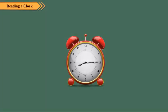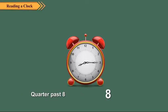Look at this clock. Here, the minute hand is at 3. The hour hand is between 8 and 9 and closer to 8. The time is 15 minutes after 8:00. We write it as quarter past 8, or 8:15. When the minute hand is at 3, the time is quarter past the hour.